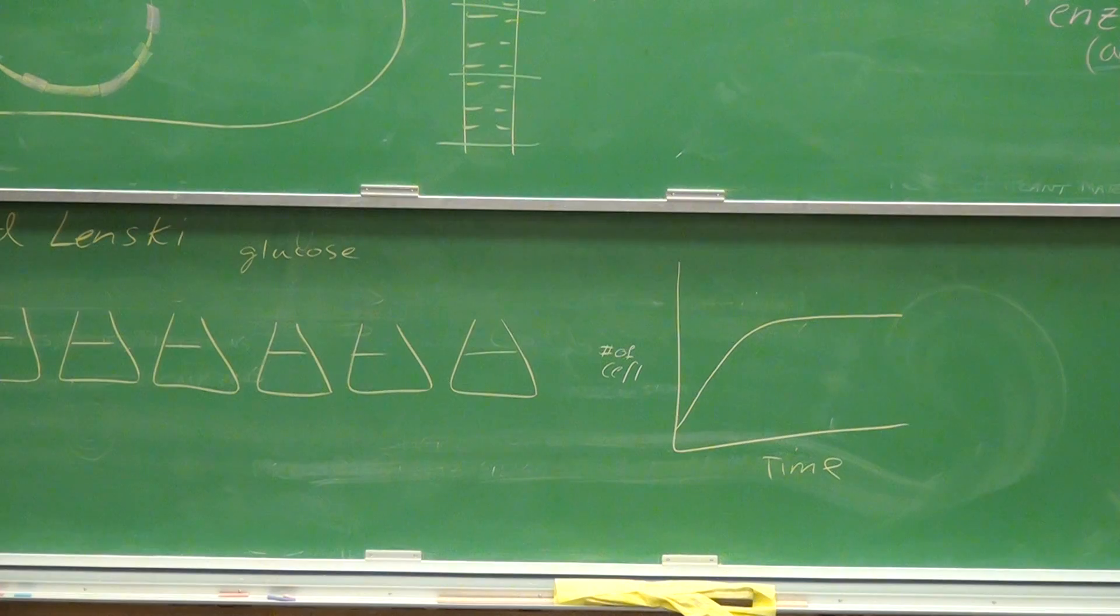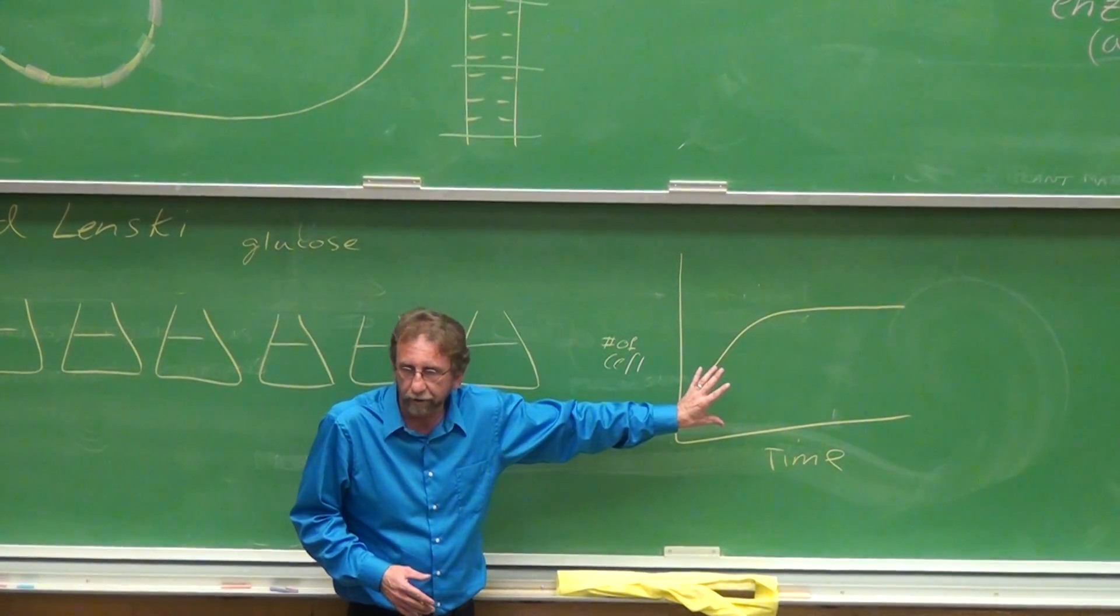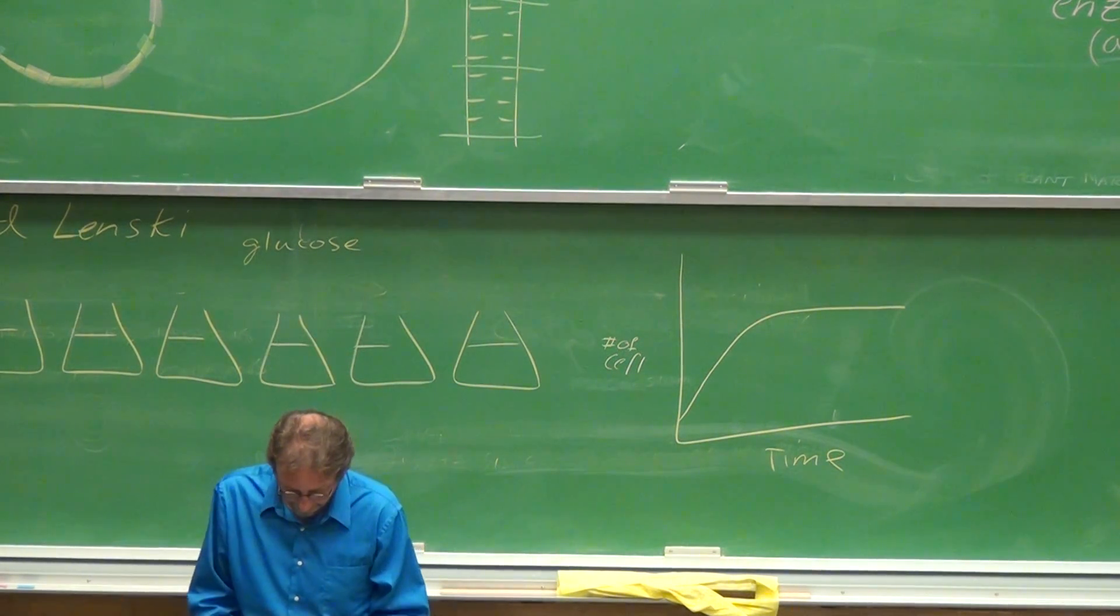They mutated, or mutations occurred, such that they became better at using the glucose in their environment. The cells became more efficient at using the glucose. They grew better.